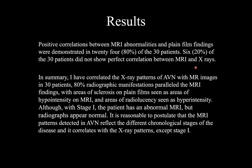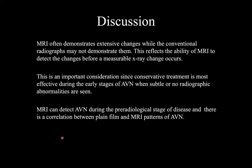In summary, X-ray patterns of AVN were correlated with MR images in 30 patients. 80% of radiographic manifestations paralleled the MRI findings, with areas of sclerosis on plain films seen as areas of hyperintensity on MRI and areas of radiolucency seen as hyperintensity. Although in stage 1 the patient has an abnormal MRI, radiographs appear normal. It is reasonable to postulate that MRI patterns detected in AVN reflect the different chronological stages of the disease and correlate with X-ray patterns except in stage 1. MRI often demonstrates extensive changes while conventional radiographs may not, reflecting the ability of MRI to detect changes before a measurable X-ray change occurs.